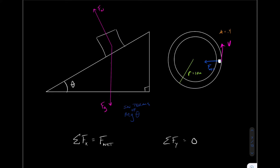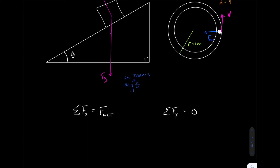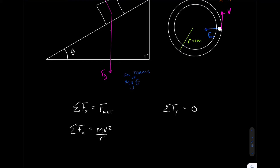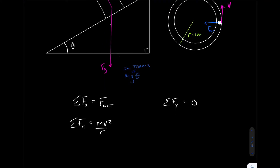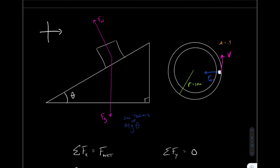Because the forces in the y-direction are zero, the forces in the x-direction must equal the net force. Since it's moving in a circle, the sum of the forces in the x-direction must equal mv²/r. What forces are in the x-direction remains to be seen based on the geometry. I'll stick with our normal x-y coordinate system. To make sense of the geometry, I'll try drawing the triangle shifted slightly, similar to what I did in class, to keep continuity.